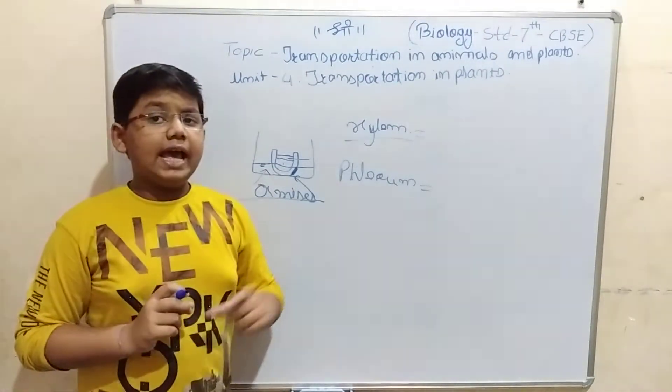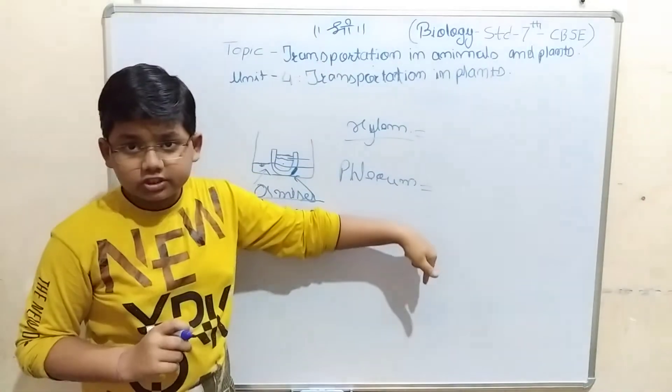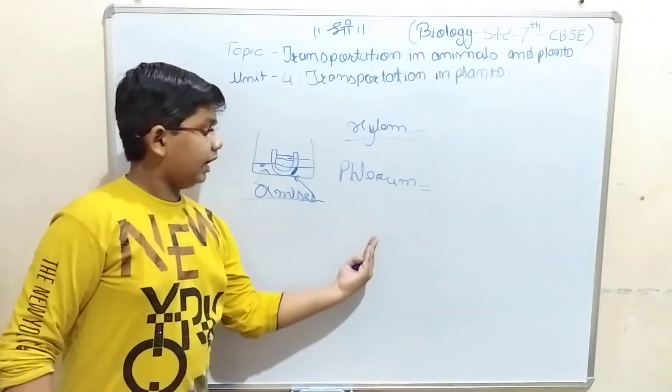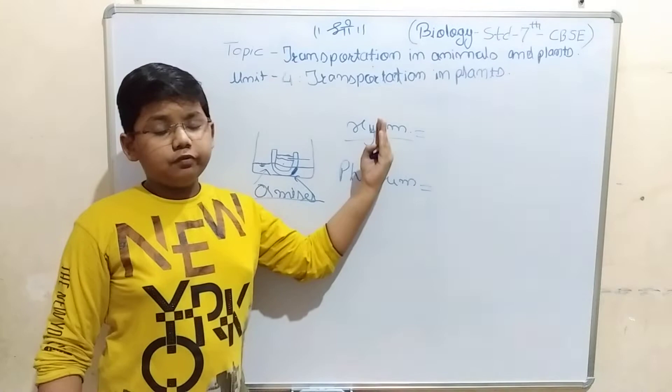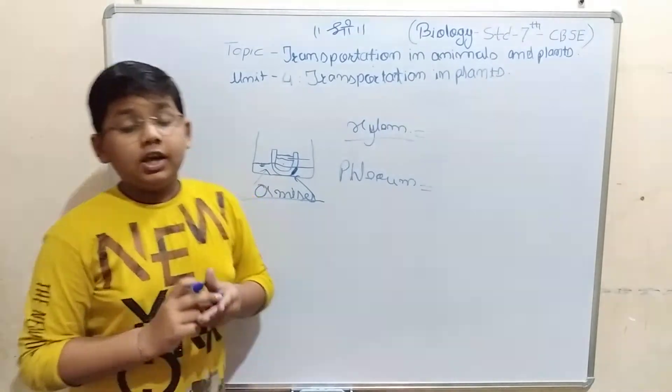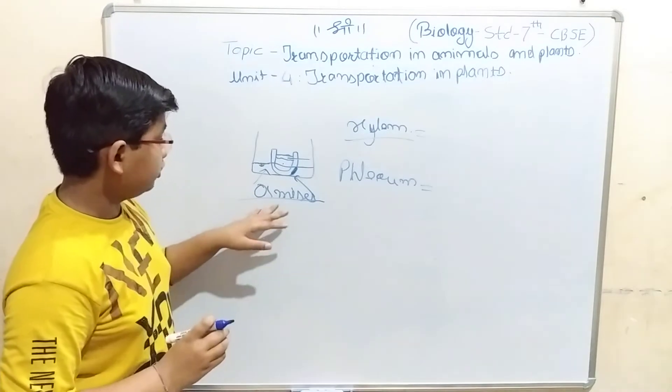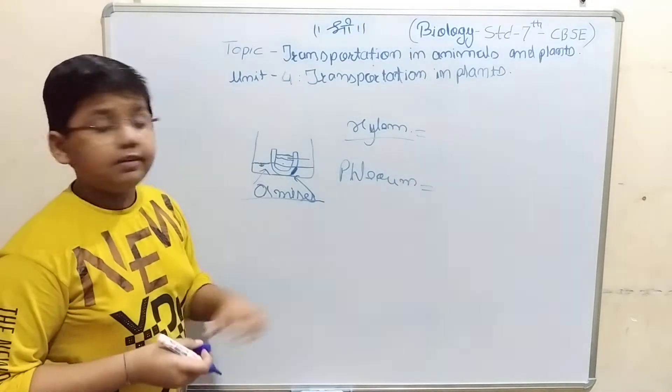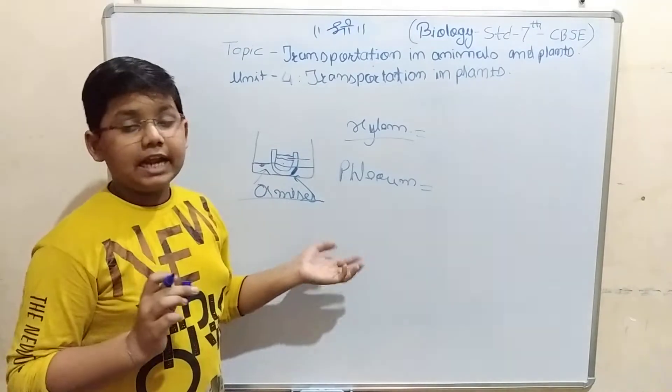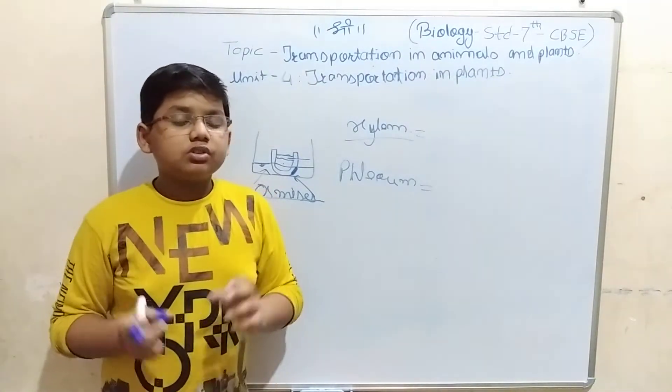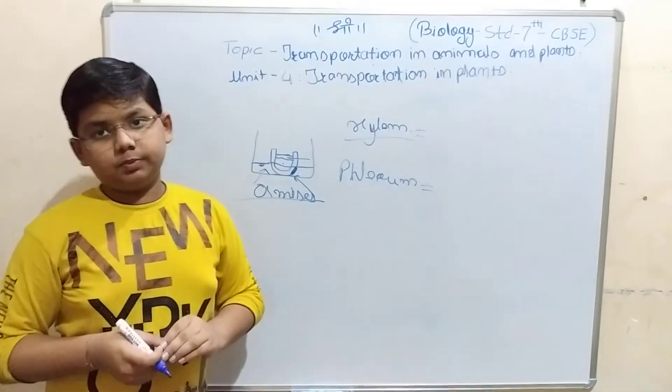But there is one question: gravity is acting in downward direction, then how does the plant push food and water upwards? Because of the pressure that is inside the plant. When oxygen molecule and hydrogen molecule are there, they are gases, which means they exert pressure.